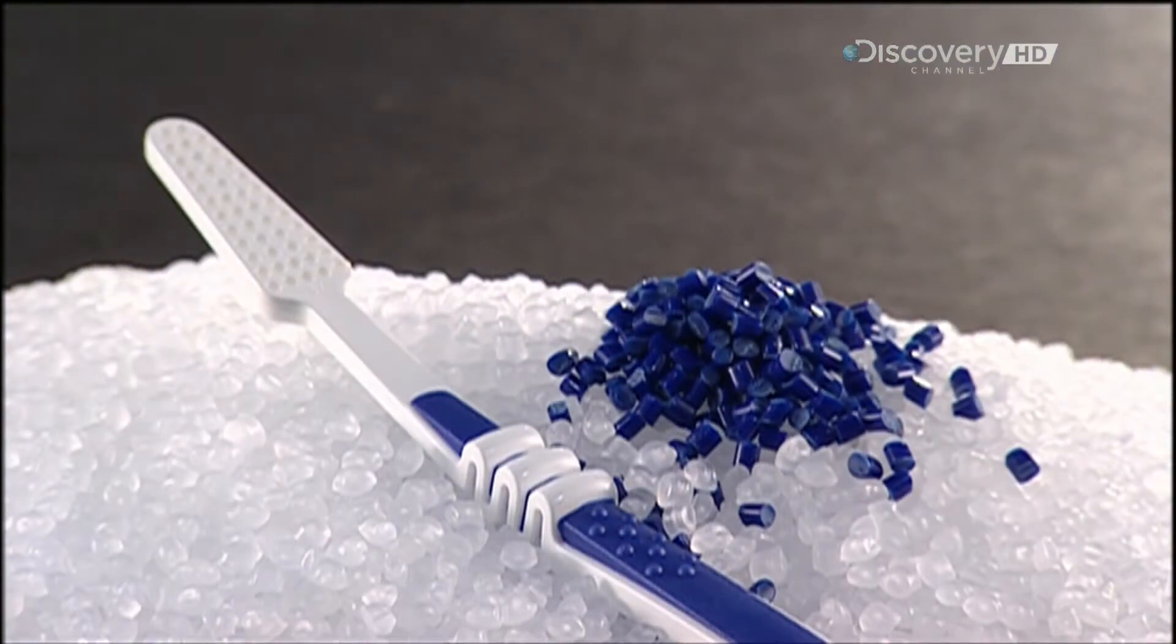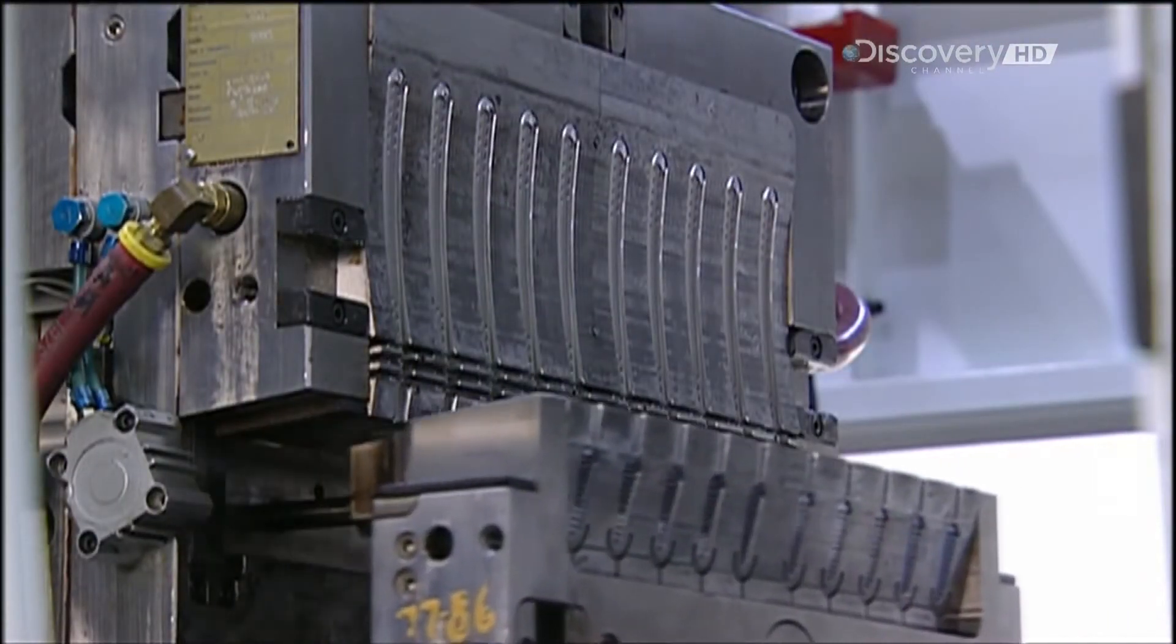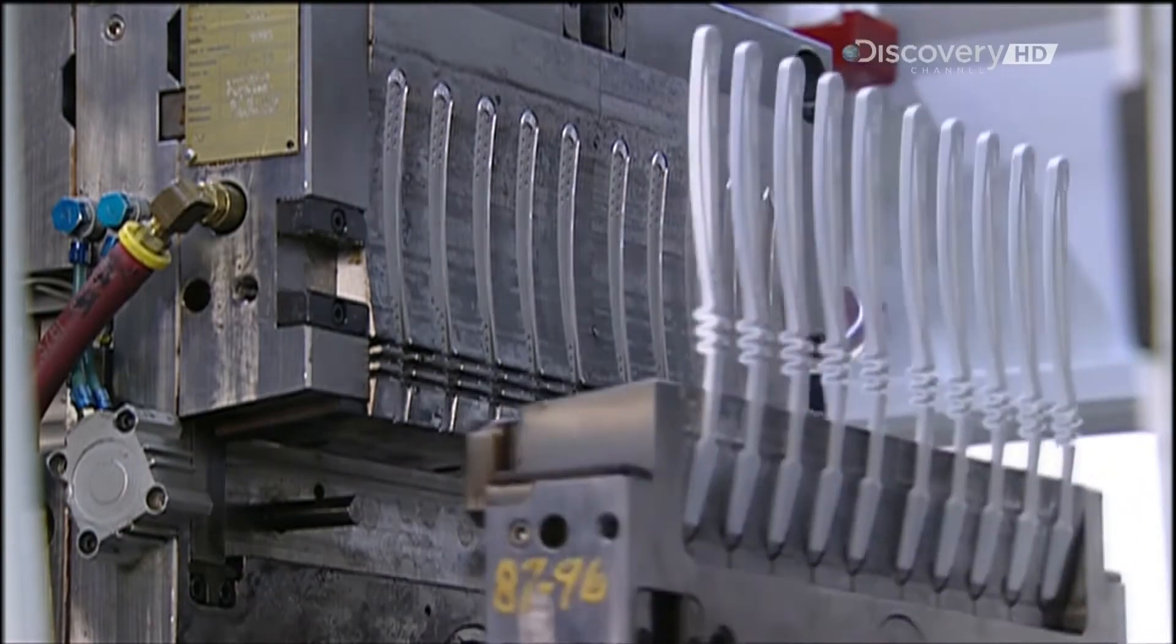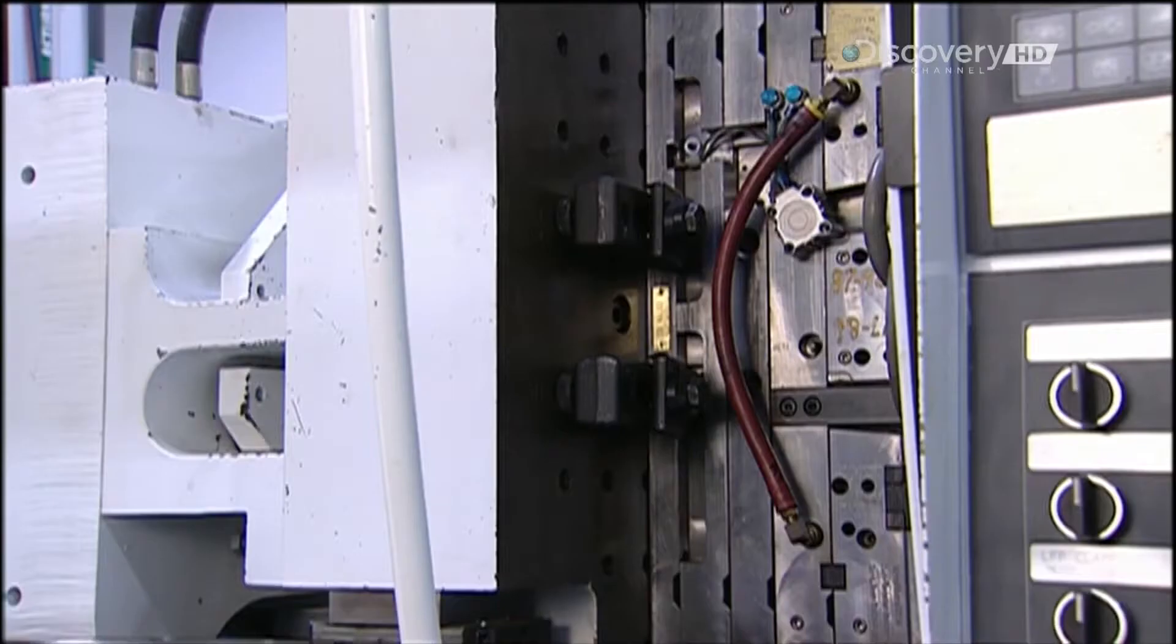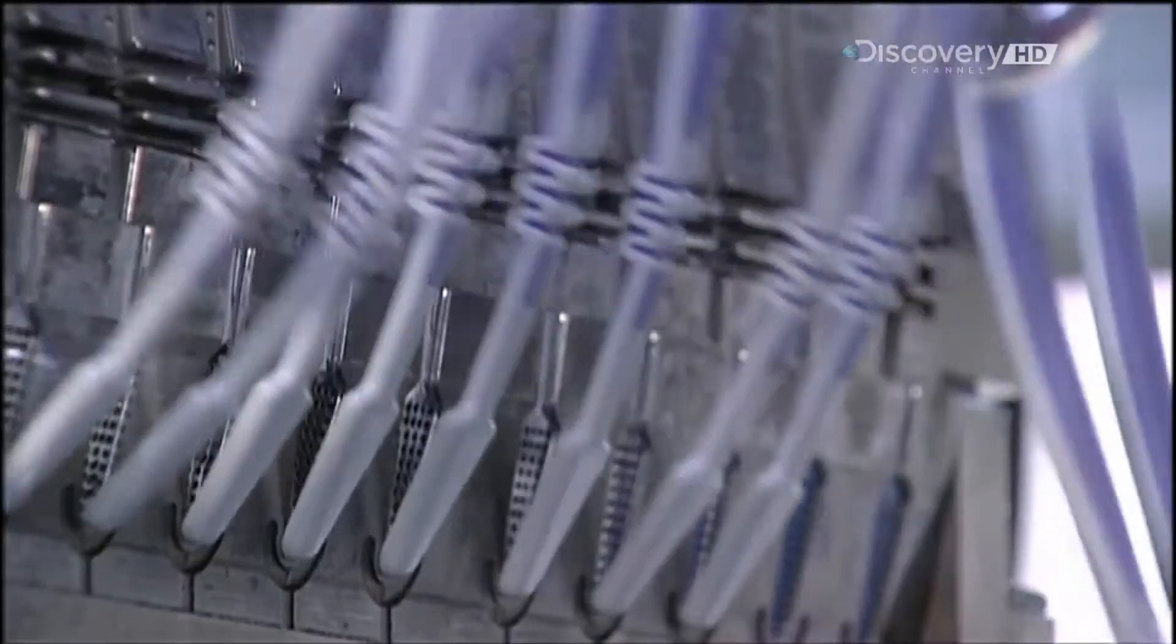Now they melt colored rubber pellets. They pipe the liquid rubber into the mold with the white toothbrush handles, then press the rubber onto the handles to form a grip.